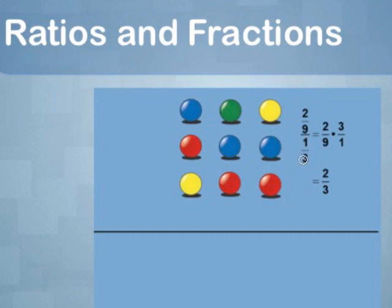something interesting results. The calculation involves dividing fractions, which we show here. 2 ninths divided by 1 third is equal to 2 ninths times the reciprocal of 1 third, or 3 over 1, or simply 3. Simplified, we get 2 thirds. Notice that this is the ratio of yellow to red.